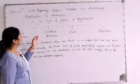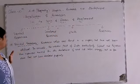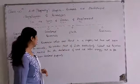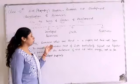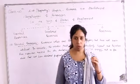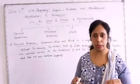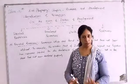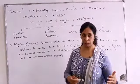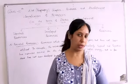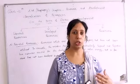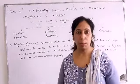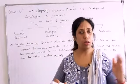On the basis of status of development, there are four parts: potential resources, developed resources, stock, and reserves. First, potential resources — these are resources which are found in a region but have not been utilized. For example, we can generate energy from the sun and from wind, but in the past we did not know about this, so at that time all of these were potential resources.